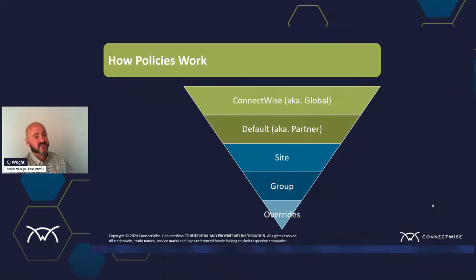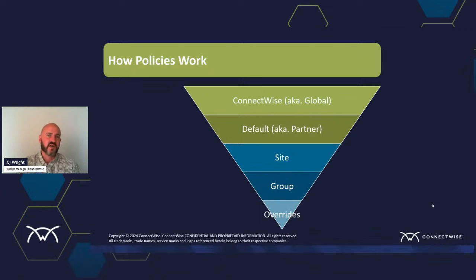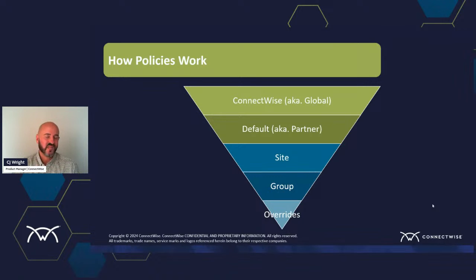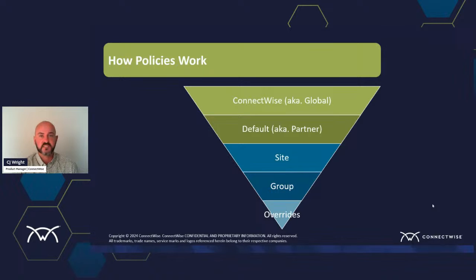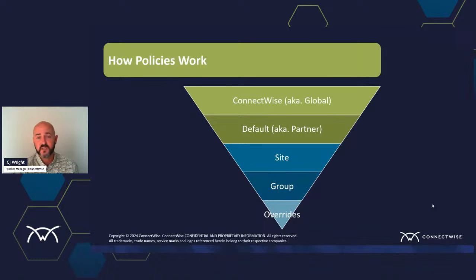In yesterday's session, we spent a lot of time talking about the hierarchy and how whenever you're looking at individual devices, you're going to see some terminology. Whenever we talk about global policies, or you see something that says 'global' on an individual device, what that means is there was a policy provided by ConnectWise that is invisible to you. It's defined by us to ensure some items are not automatically turned off — we want it to be an opt-in experience so you have control over whether features are enabled for your clients.